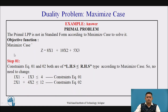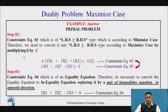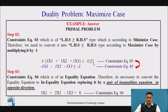Step 1: Constraint equations 1 and 2 are of LHS less than or equal to RHS type, according to the maximized case, so there is no need to change — keep as is. Step 2: Constraint equation 3 is of LHS greater than or equal to RHS type, which is according to the minimized case. Since our problem is of maximized case, we convert constraint 3 by multiplying both sides by −1. After multiplying, we get the new constraint: −1x1 − 1x2 − 1x3 ≤ −2.